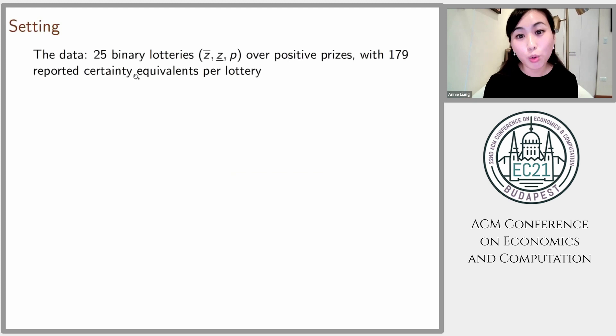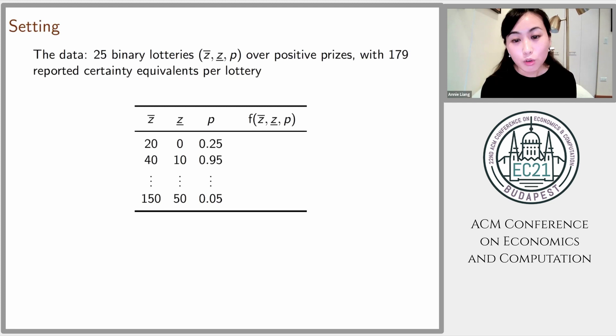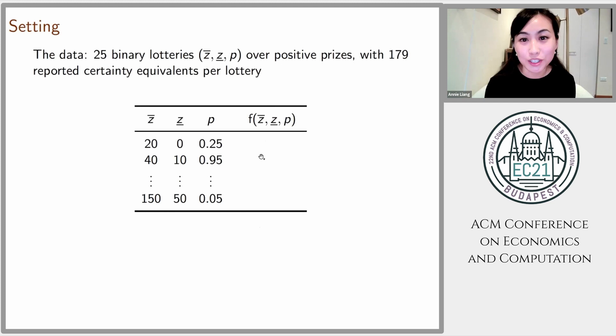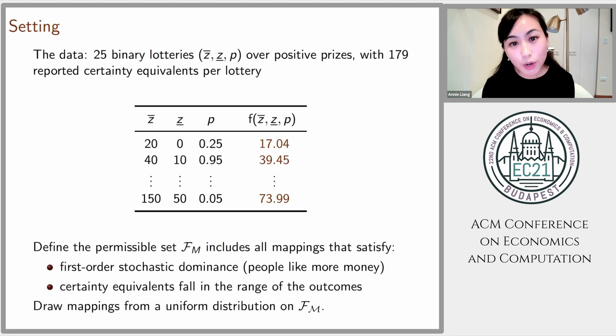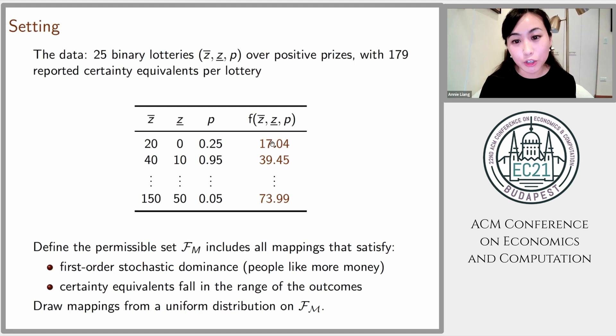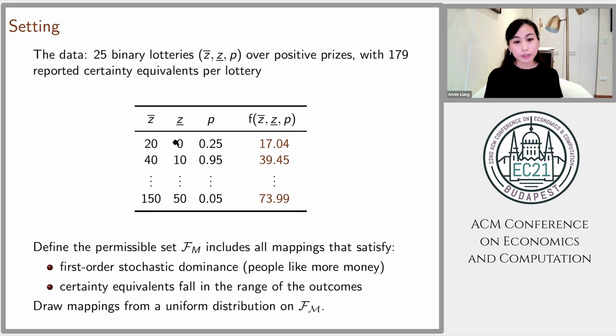Back to the motivating example. Our data consists of 25 binary lotteries with many reported certainty equivalents per lottery. We keep the lotteries as given in the data, but ignore the real certainty equivalents. We generate fake average certainty equivalents, one per lottery, constrained to obey two basic properties: first, if one lottery first-order stochastically dominates another, its average certainty equivalent should be higher — roughly tracking that people like money. Second, the certainty equivalents must fall within the range of possible prizes. Subject to these constraints, we generate mappings uniformly at random.